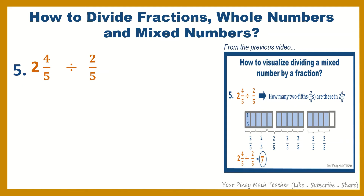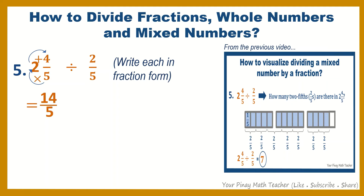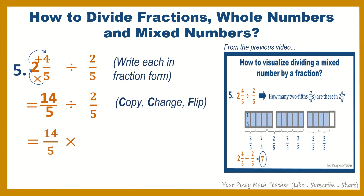Number 5: 2 and 4 fifths divided by 2 fifths. Write each in fraction form. 2 and 4 fifths is equivalent to 14 fifths — 5 times 2 is 10, plus 4 is 14, over the denominator 5 — divided by 2 fifths. Then copy, change, flip: copy 14 fifths, change division to multiplication, and flip 2 fifths, which equals 5 halves. Then multiply. 5 halves is the reciprocal of 2 fifths.